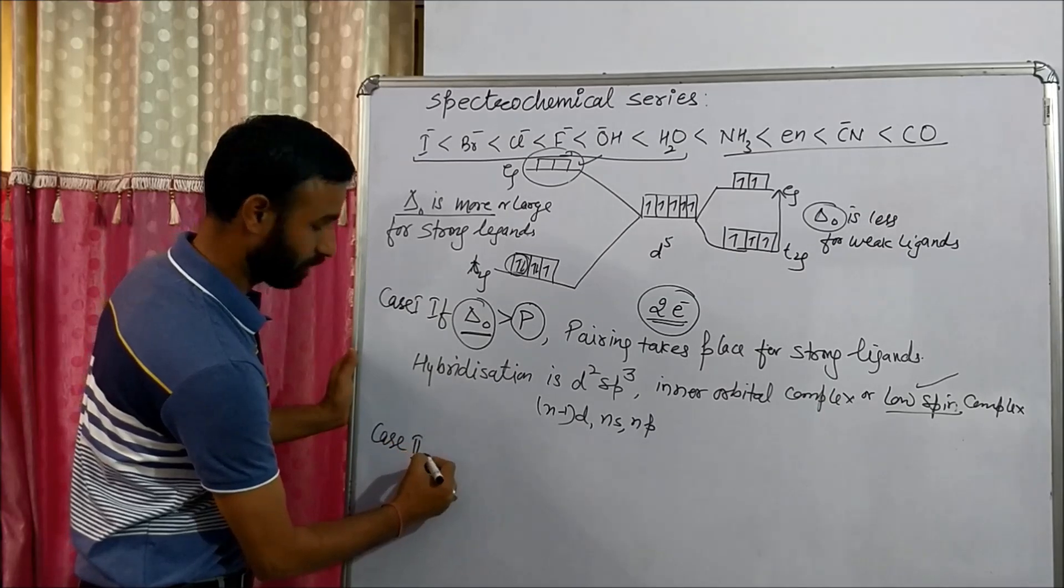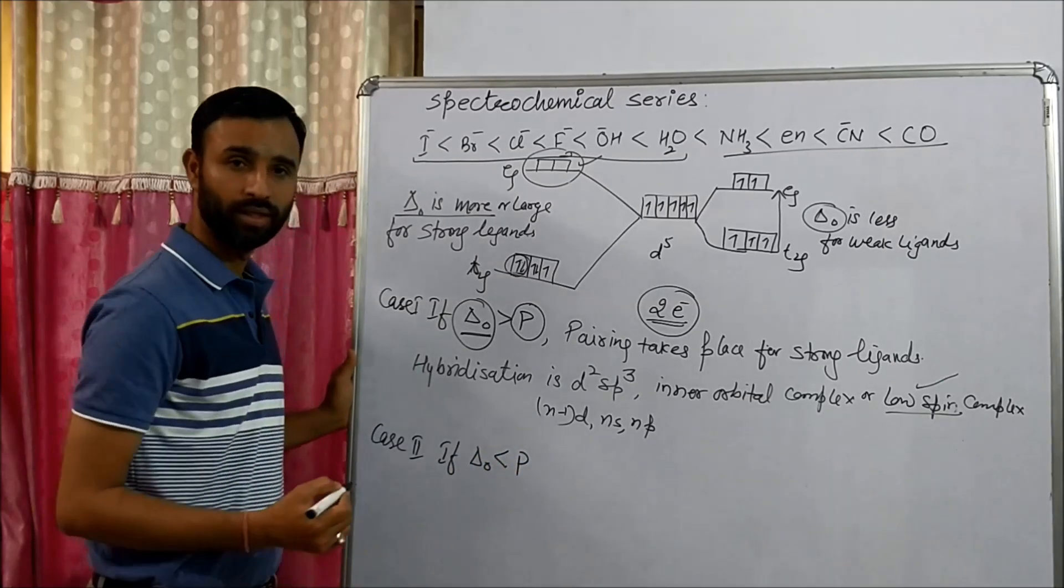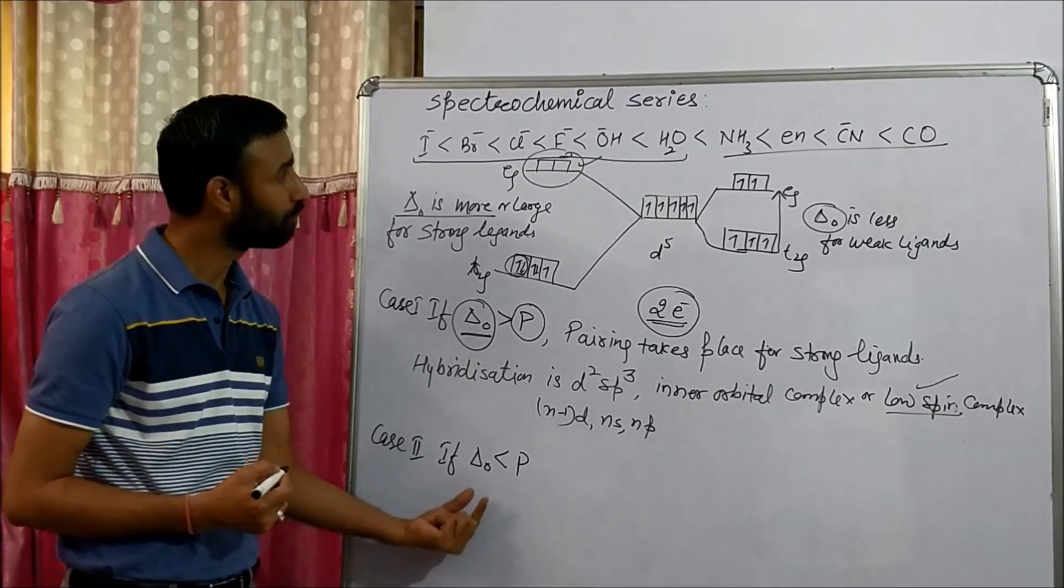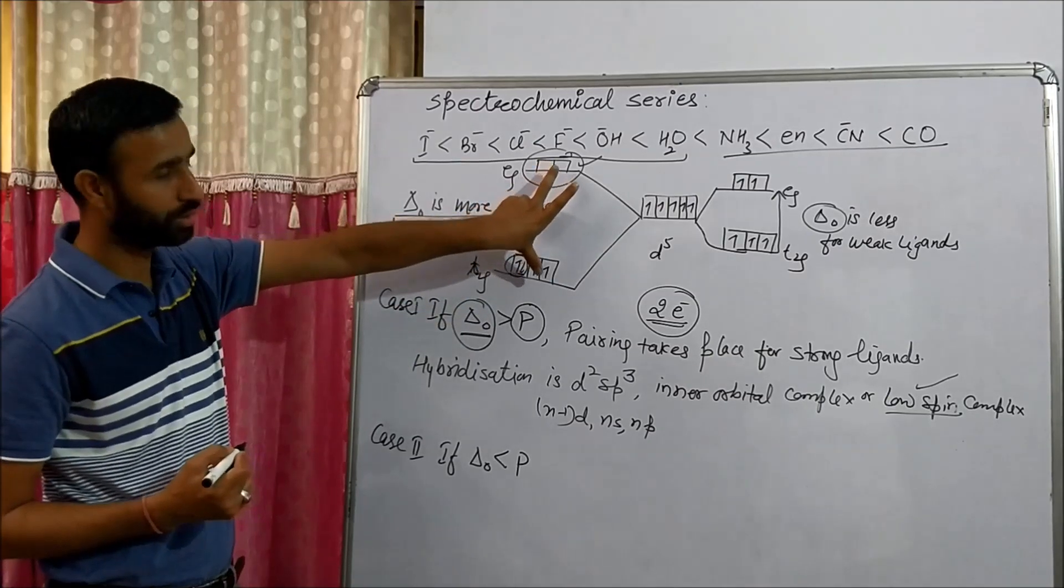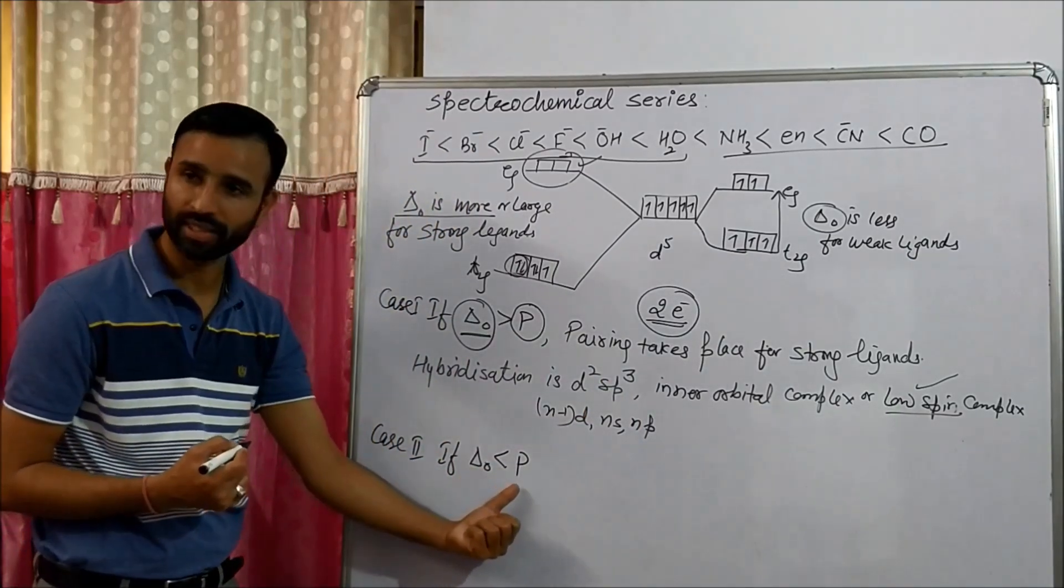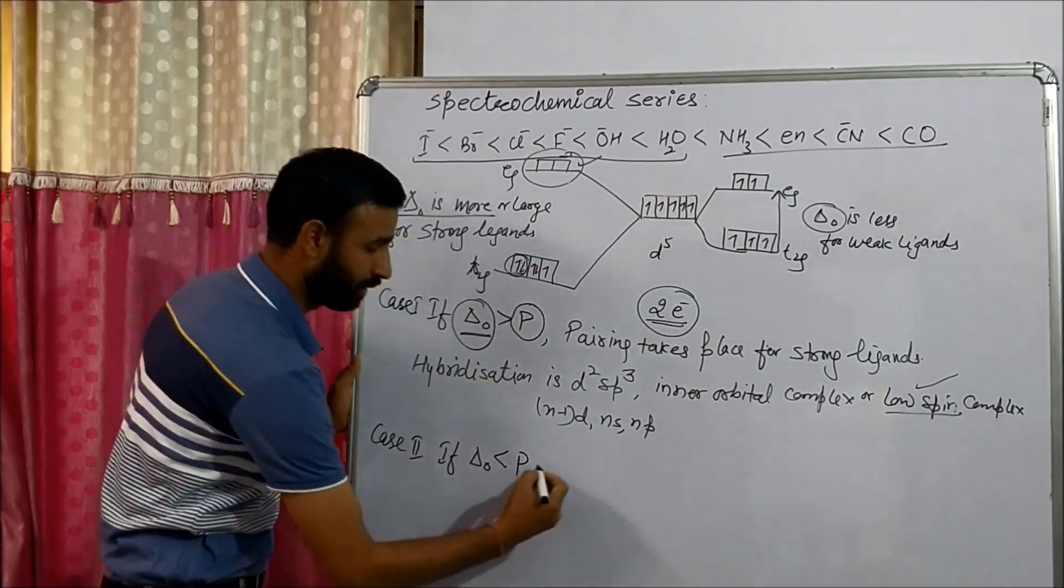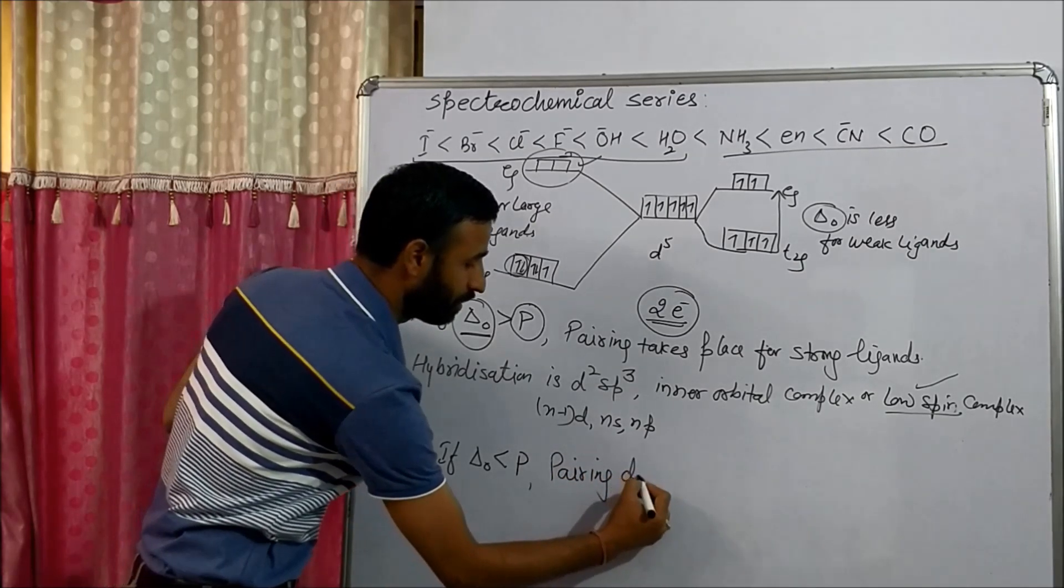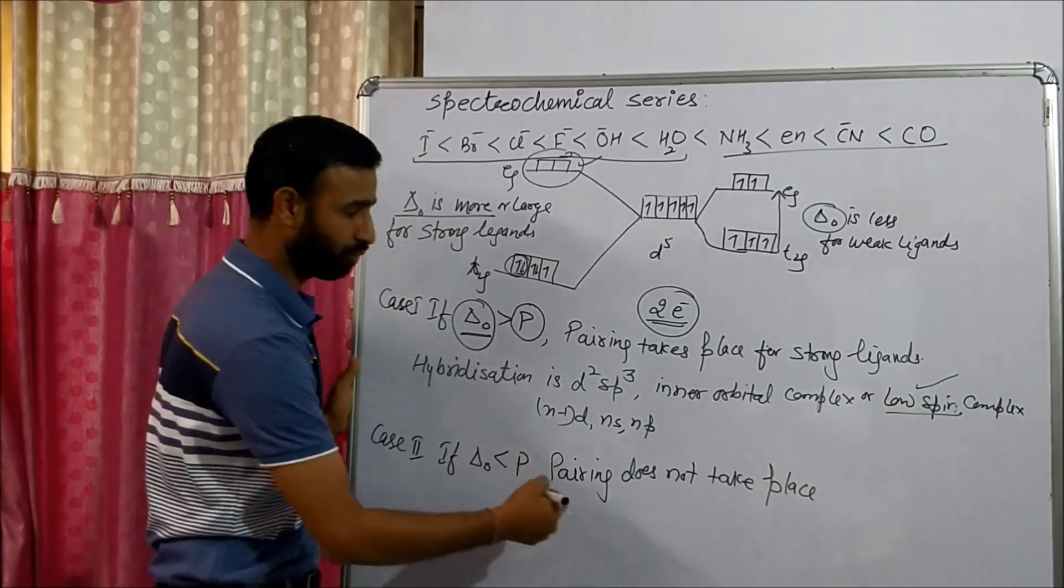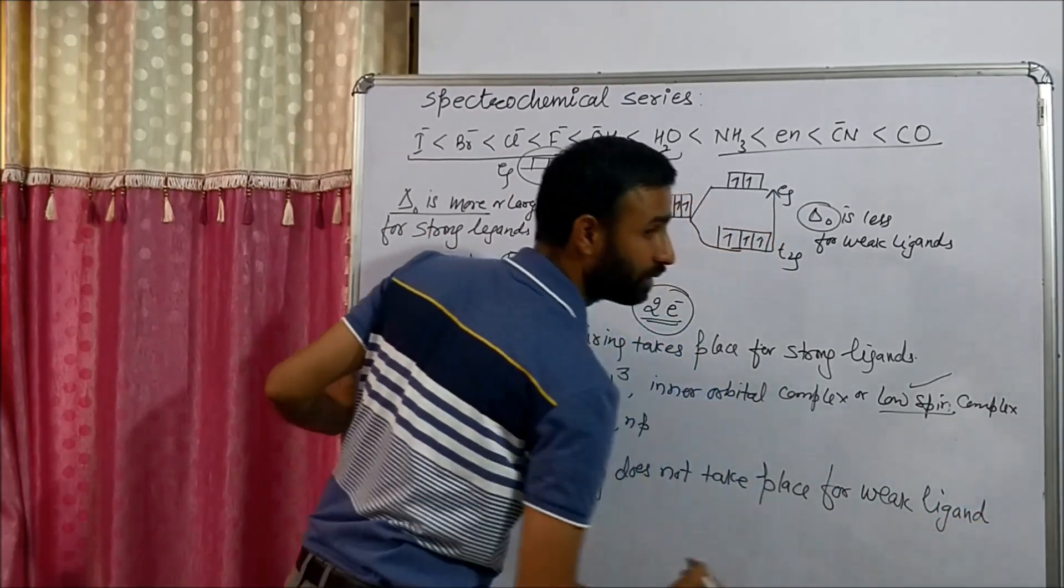Case 2. If delta O is less than P. Now delta O is less than P means ligand is weak. If ligand is weak, because if ligand is strong, then difference is more. So if delta O is less than P, then shifting takes place, or we can say pairing does not take place. Now if pairing does not take place, that is for weak ligands.